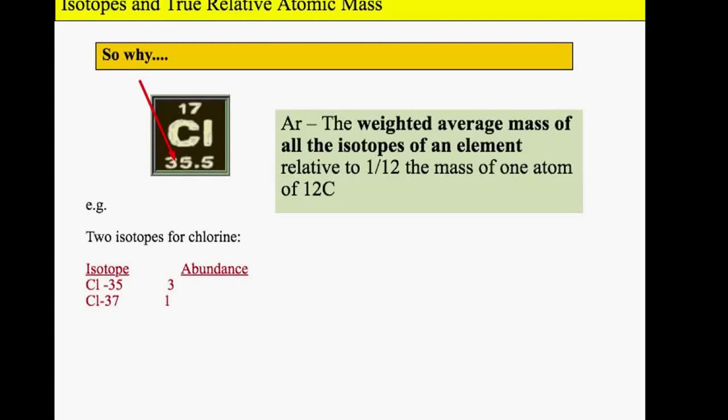We also take into account the abundance. You can see it's three times more likely that we have chlorine-35. This one is more abundant, whereas chlorine-37 is more rare. We take the abundance into account when working out the relative atomic mass. That's why I use the word weighted average. The average mass of 35 and 37 would be 36, but the weighted average mass is 35.5.